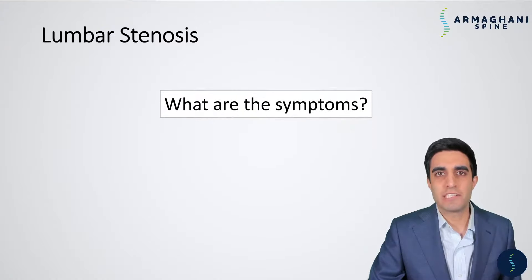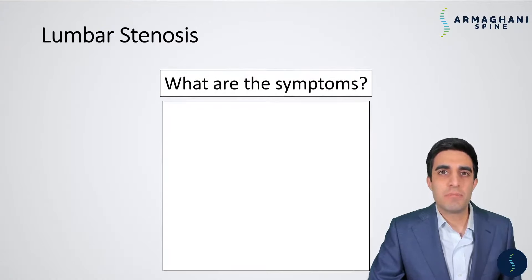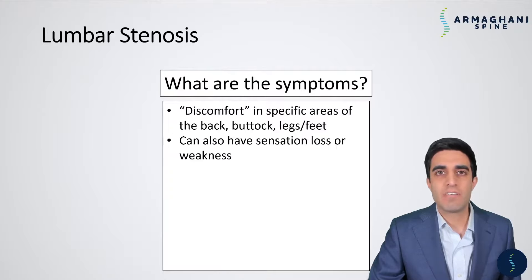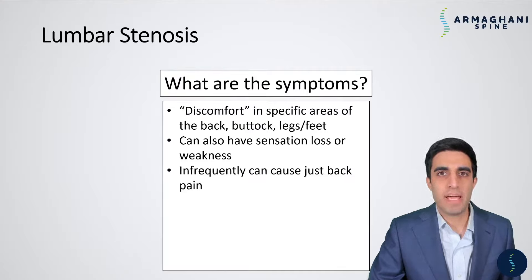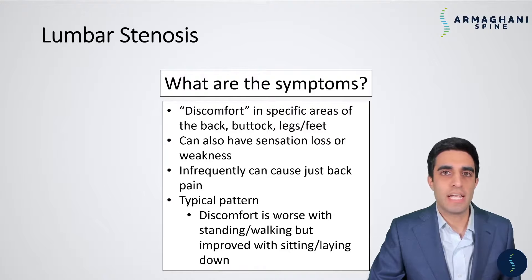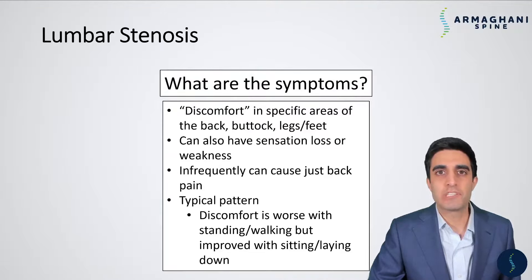What are the symptoms of spinal stenosis? When patients come in with this kind of condition, they can describe discomfort mostly in their buttock and hamstrings, but it can also extend down into their calves and feet. This can also involve sensation loss or weakness, such as their legs giving out. Infrequently, this can cause purely back pain — that isn't a typical pattern. The pattern generally involves discomfort worsening the longer they're standing and walking, and it improves when they sit down, lay down, or lean over something such as a cart in a grocery store.